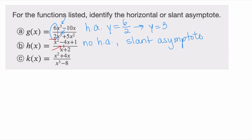For k(x), the degree of the numerator is two, and the largest power of the denominator is three. So the top is smaller. When the top is smaller, we automatically have a horizontal asymptote: y is equal to zero.